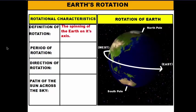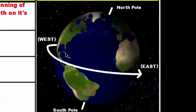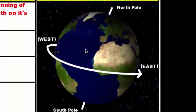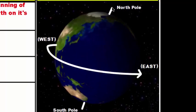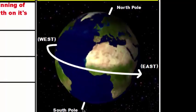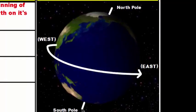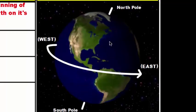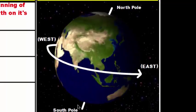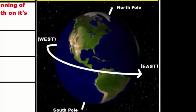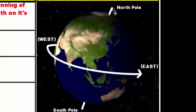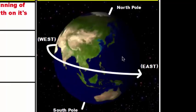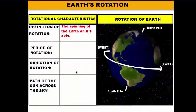Earth's rotation is defined simply as the spinning of the earth on its axis. The earth spins in place around this imaginary line that runs through the middle of the earth at a 23.5 degree angle, called its axis. We identify the top of the axis with the north pole and the bottom with the south pole. That central line is the line that cuts through the middle as the earth spins.